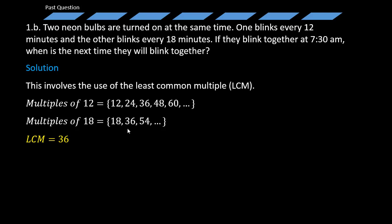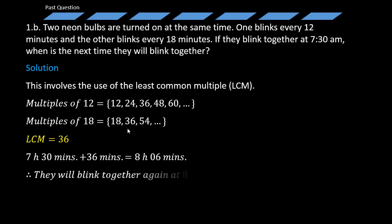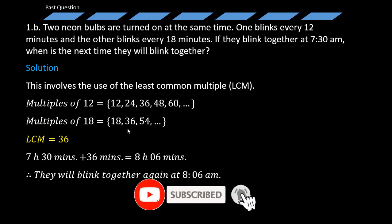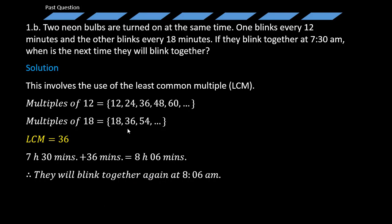We are looking for the time. They said if they blink together at 7:30 a.m., when is the next time they will blink together? We simply add 36 minutes to 7:30: 7 hours 30 minutes plus 36 minutes gives us 8 hours 6 minutes. Therefore, they will blink together again at 8:06 a.m. — in other words, 6 minutes past 8 a.m. I hope you understand this presentation.